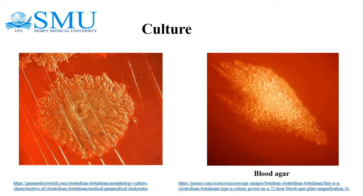Culture characteristics of Clostridium botulinum: isolation is done on blood agar or Robertson's cooked meat broth. In Robertson's cooked meat broth, turbidity occurs with meat particles turning black and production of foul odor (proteolytic strains ABF). Saccharolytic strains CDE produce pink coloration. On blood agar, colonies are large, irregular, semi-transparent, hemolytic with fimbriated borders.